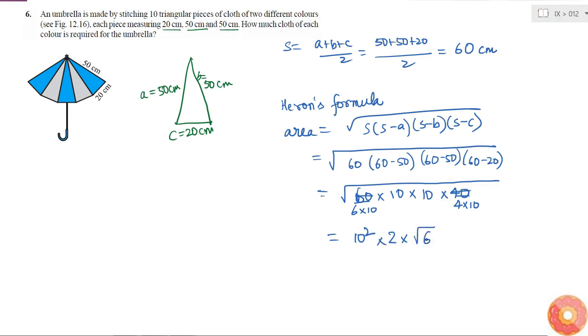6 is not a perfect square so I will be leaving it like this. So this is equal to 200 root 6 cm square. This is the area of one piece of cloth.